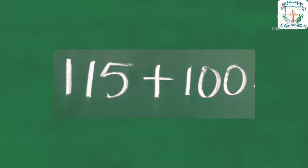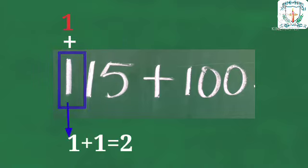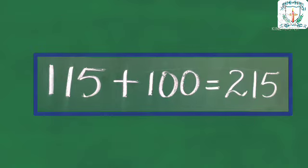115 plus 100. Here the digit 1 is in hundreds place. Let us increase 1 by 1. That is 1 plus 1 is equal to 2. Therefore, 115 plus 100 is equal to 215.